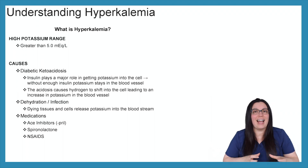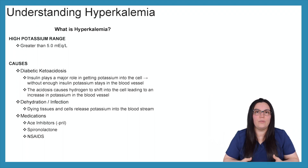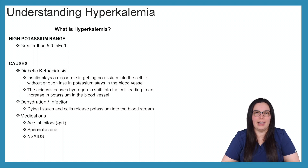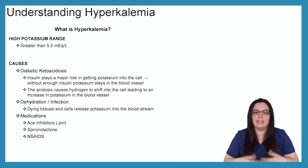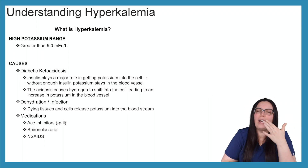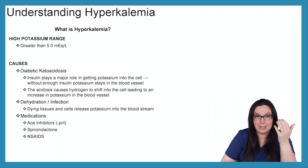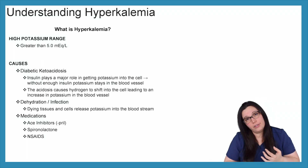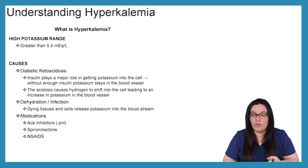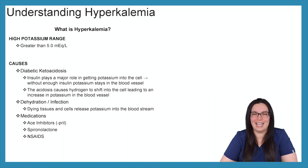The acidosis causes hydrogen to shift into the cells, increasing potassium in the blood vessels. If we've got more hydrogen moving into our cells, we're going to have more potassium coming out, causing hyperkalemia. Dehydration and infection are another big cause — dying tissues and cells release potassium into the bloodstream. Pretty much any cell death or lysis will increase your potassium levels. Lastly, medications: ACE inhibitors, specifically the '-prils', will cause hyperkalemia. Spironolactone, a potassium-sparing diuretic, as well as many NSAIDs will cause your serum potassium to increase.